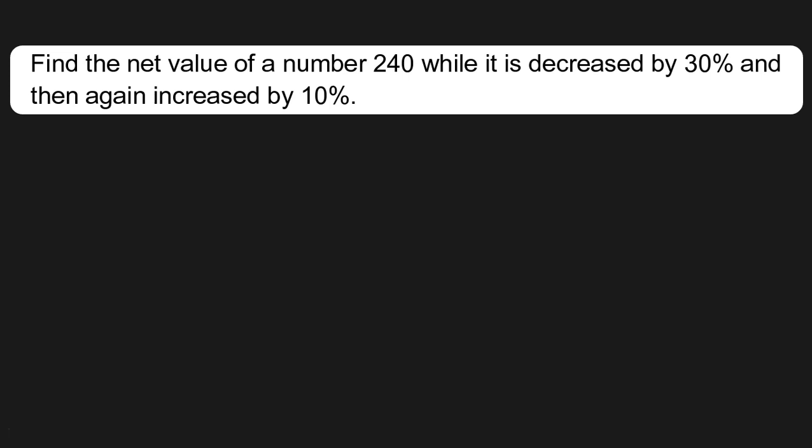Find the net value of a number 240 while it is decreased by 30 percent and then again increased by 10 percent. Before finding the net value, we have to always first find the net percentage change of a given number. The given number in the question is 240. First, it is decreased by 30 percent.